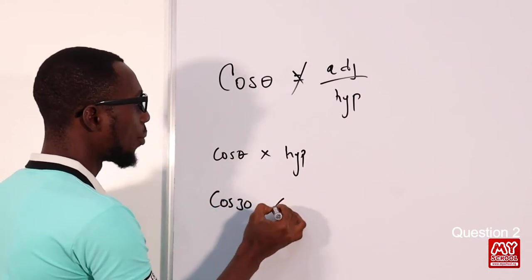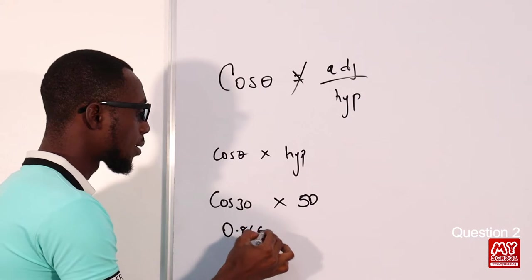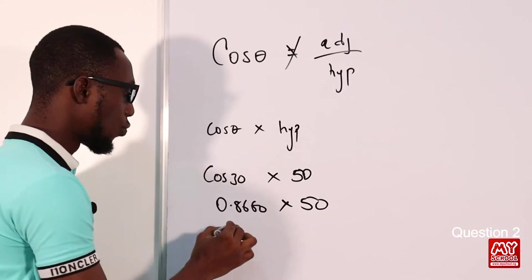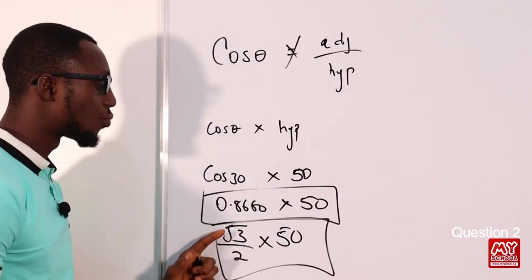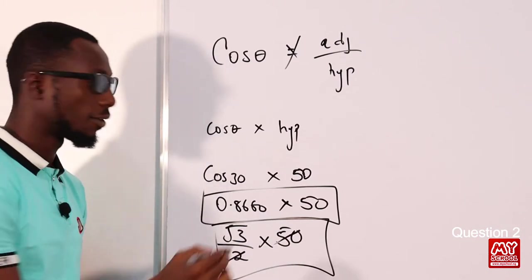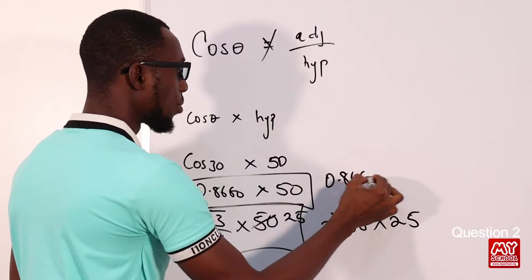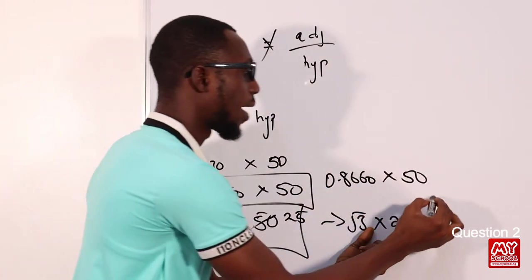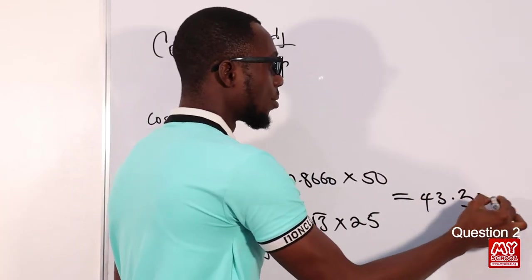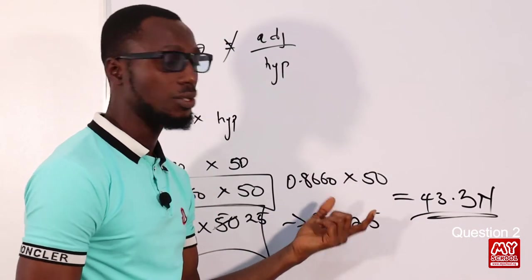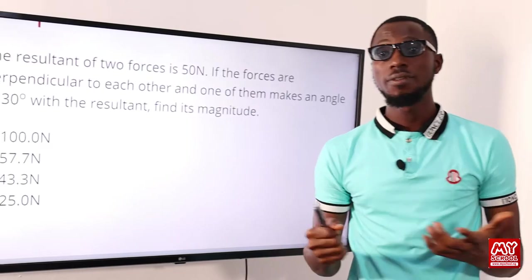cos 30° equals 0.8660, which can also be written as root 3 over 2. Multiplying by 50: root 3 over 2 times 50 equals 25 root 3, or 0.8660 times 50, giving us 43.3 newtons. Scanning through the options, we find 43.3 newtons in option C, so option C is the correct answer.